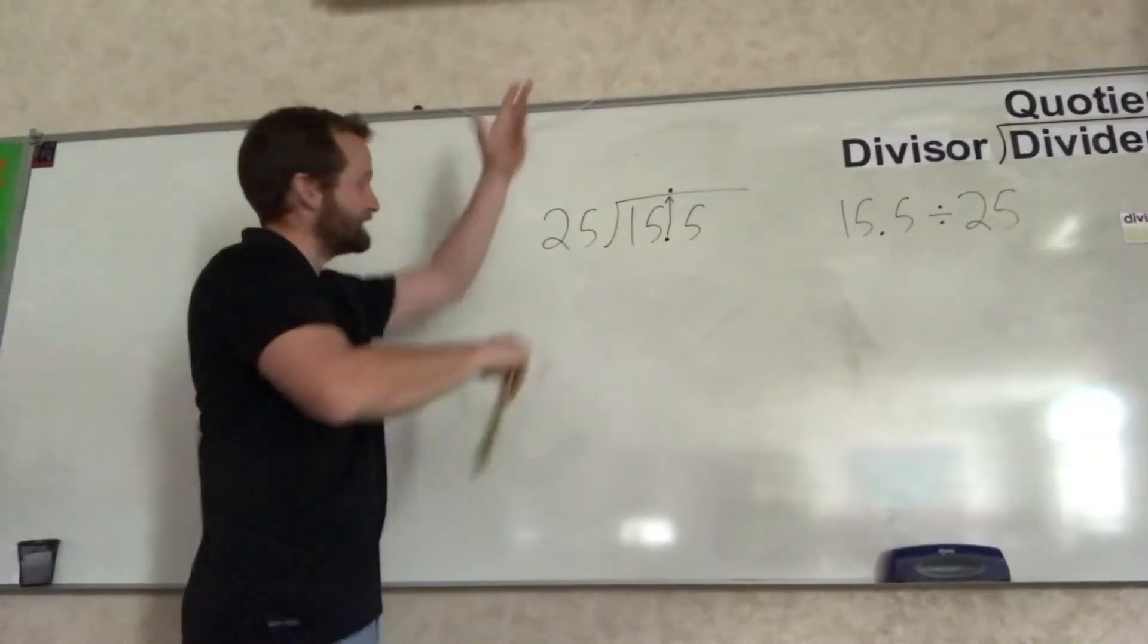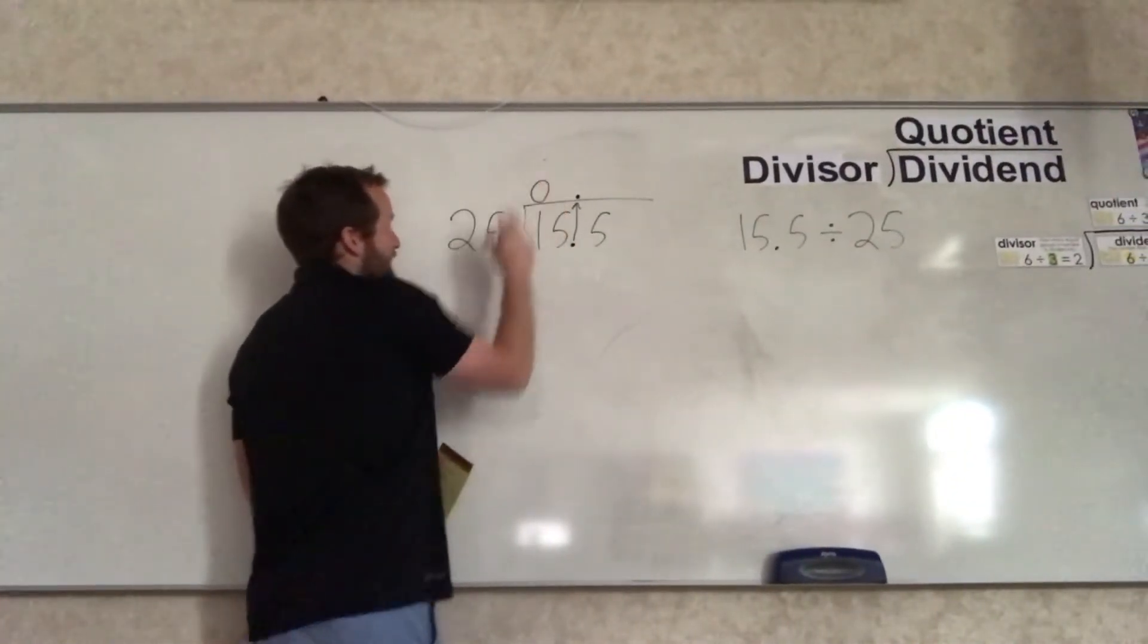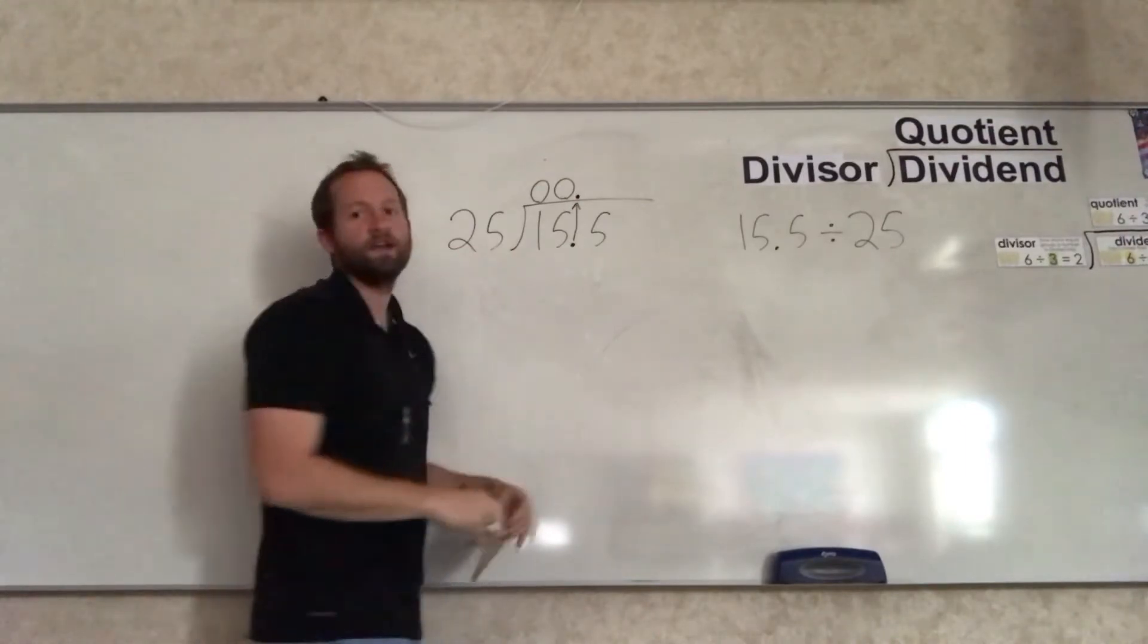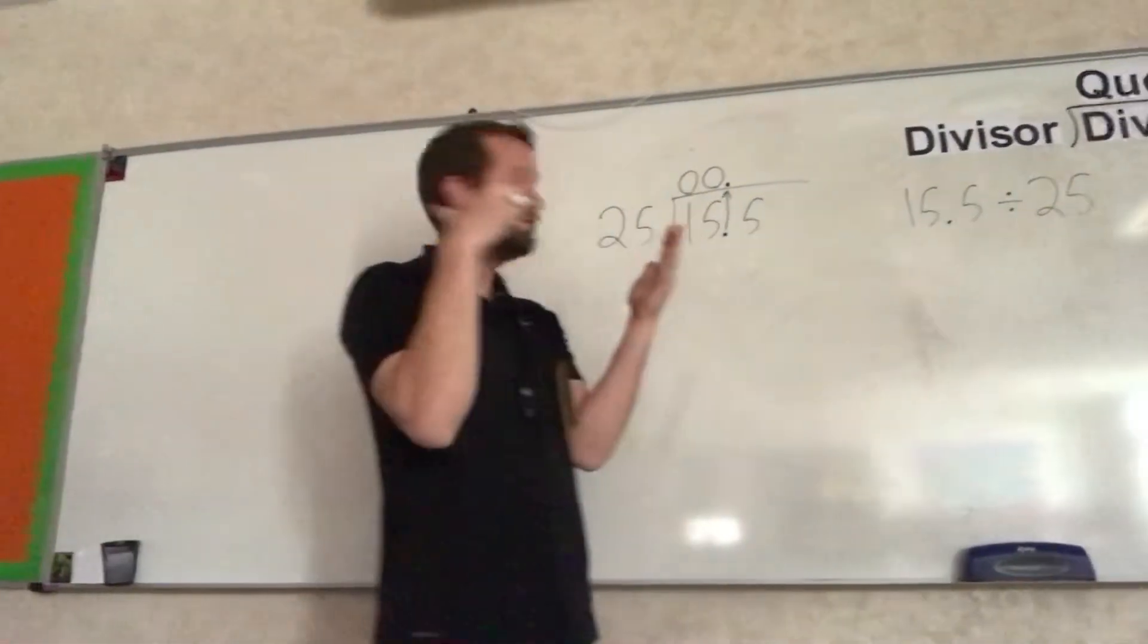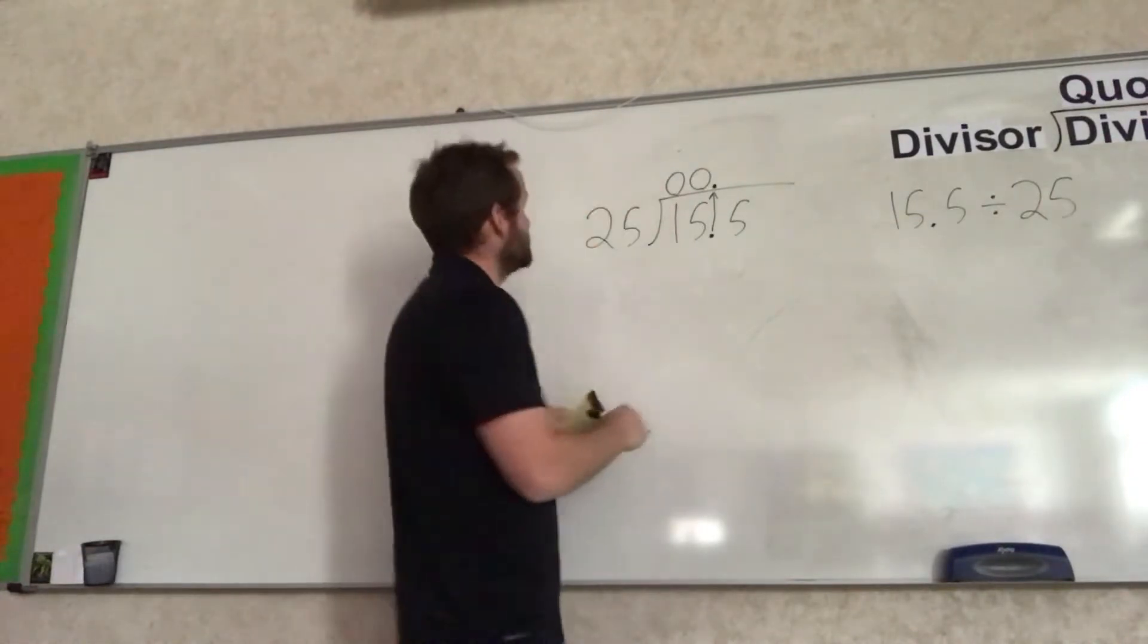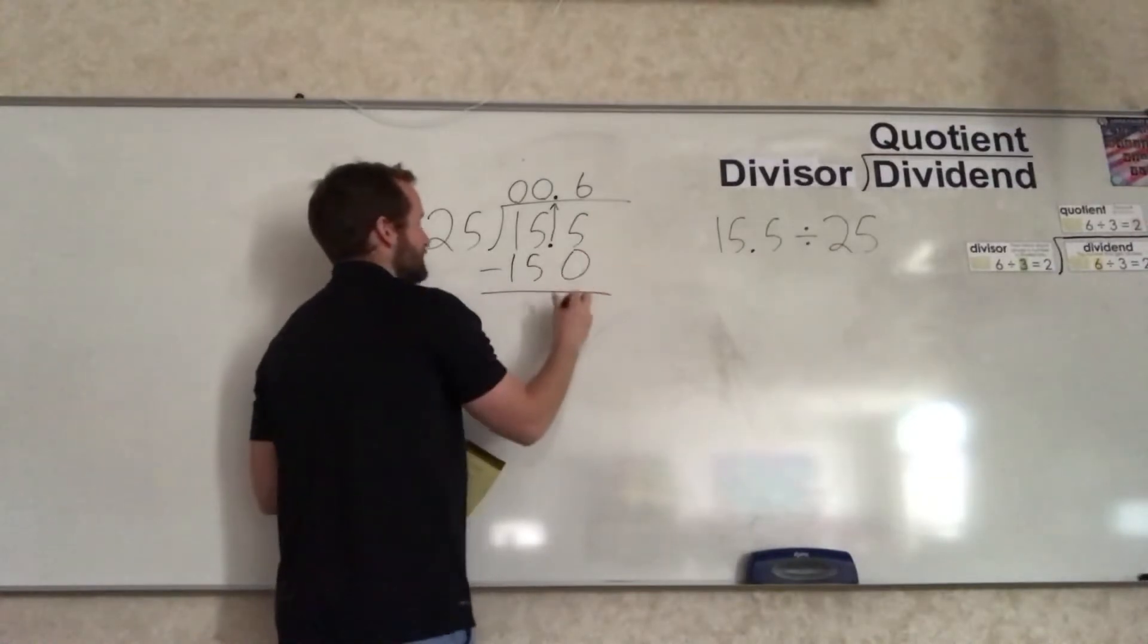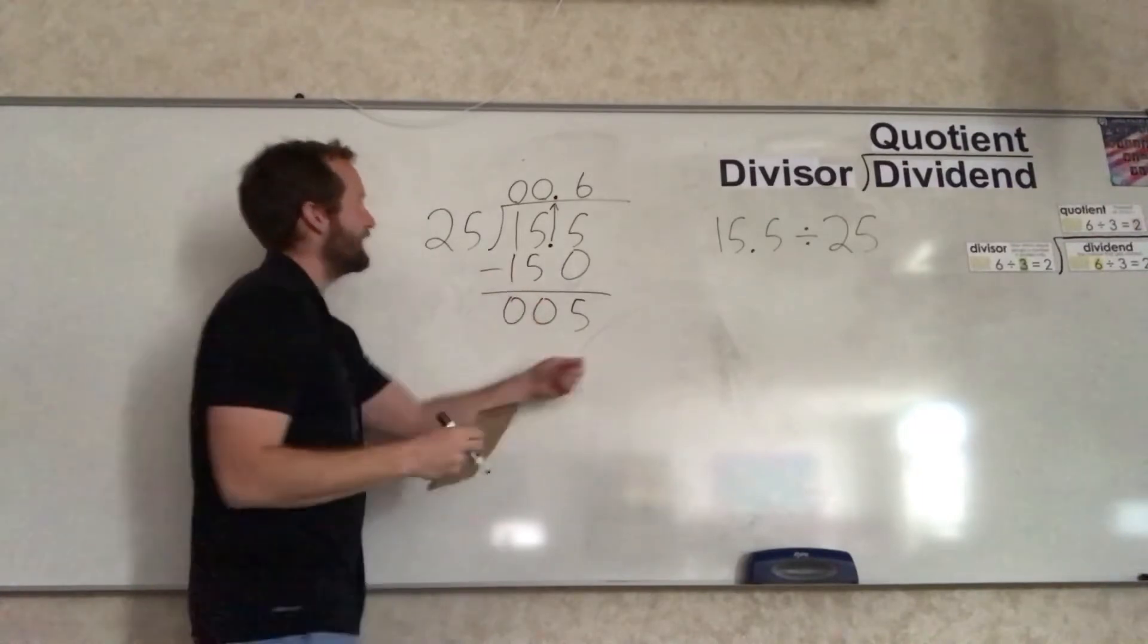Let's go through and start doing that. Does 25 fit into 1? It does not. It fits in 0 times. How many times does 25 fit into 15? Also 0 times. How many times does 25 fit into 155? We know 25, 50, 75, 100, 125, 150 - 175 is too big, so it will fit in 6 times. 6 times 25 is 150. And we go ahead and subtract. 5 minus 0 is 5, 5 minus 5 is 0, 1 minus 1 is 0. So we have 5 left.